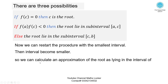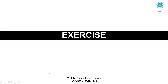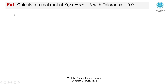We can calculate an approximation of the root as lying in an interval of length |b - a| / 2^n, which gives the error bound for the bisection method.